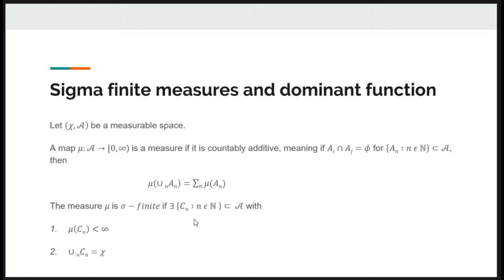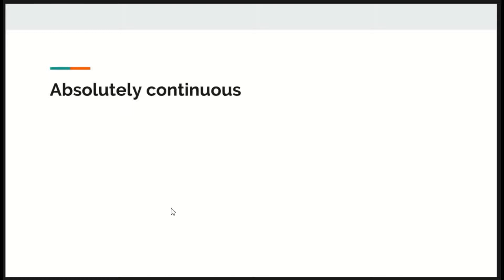The measure mu is sigma finite if there exist n sets belonging to A with measure of each set is finite and union of sets is equal to chi.